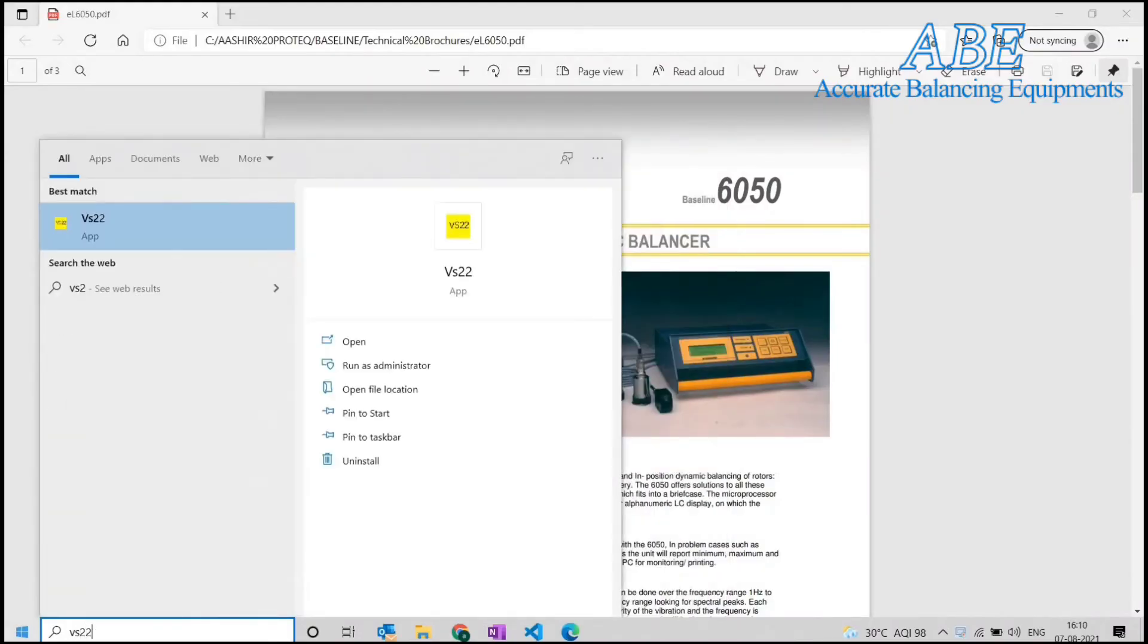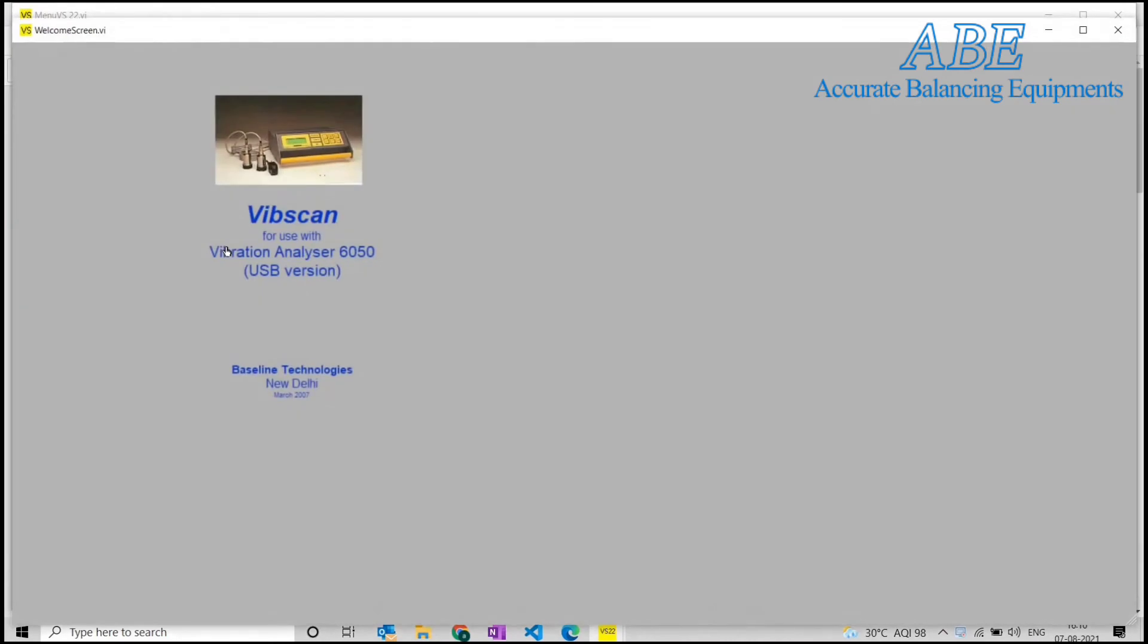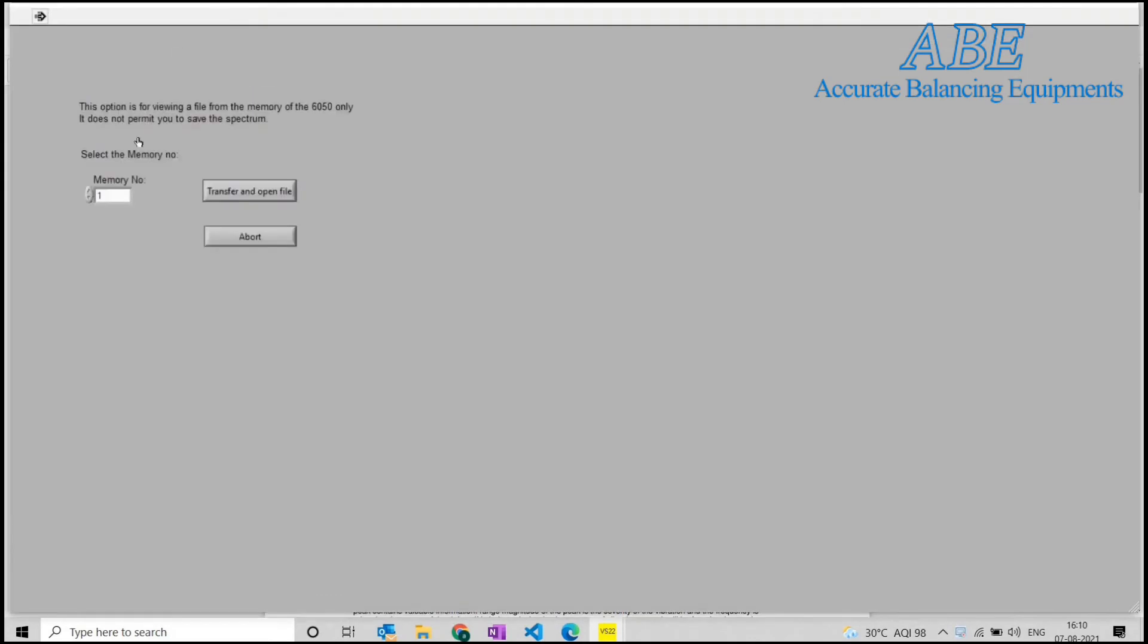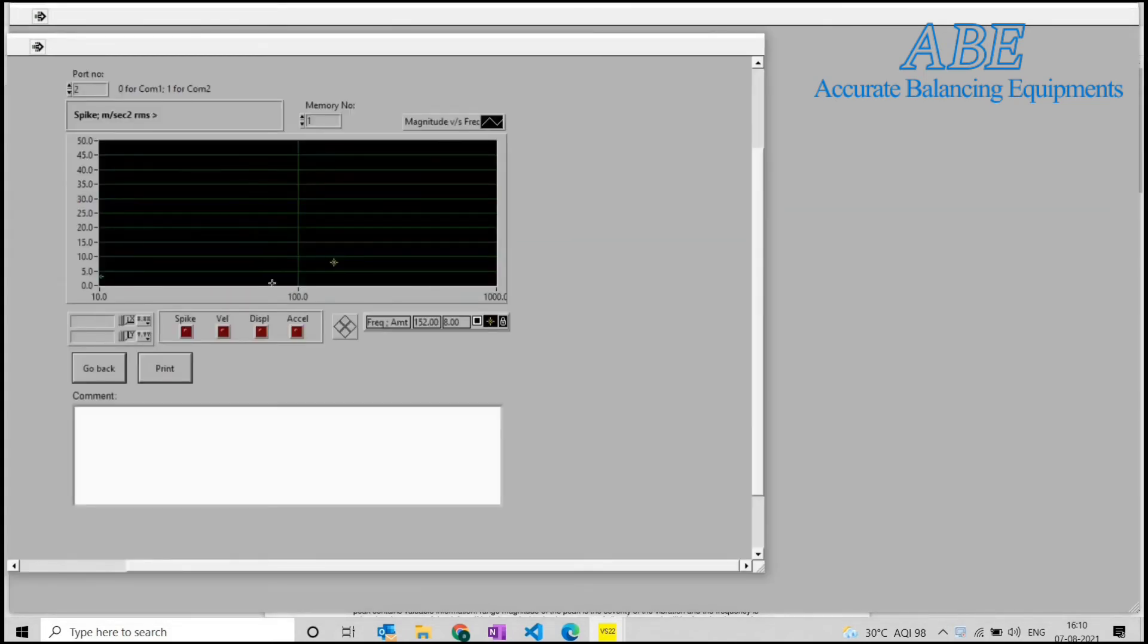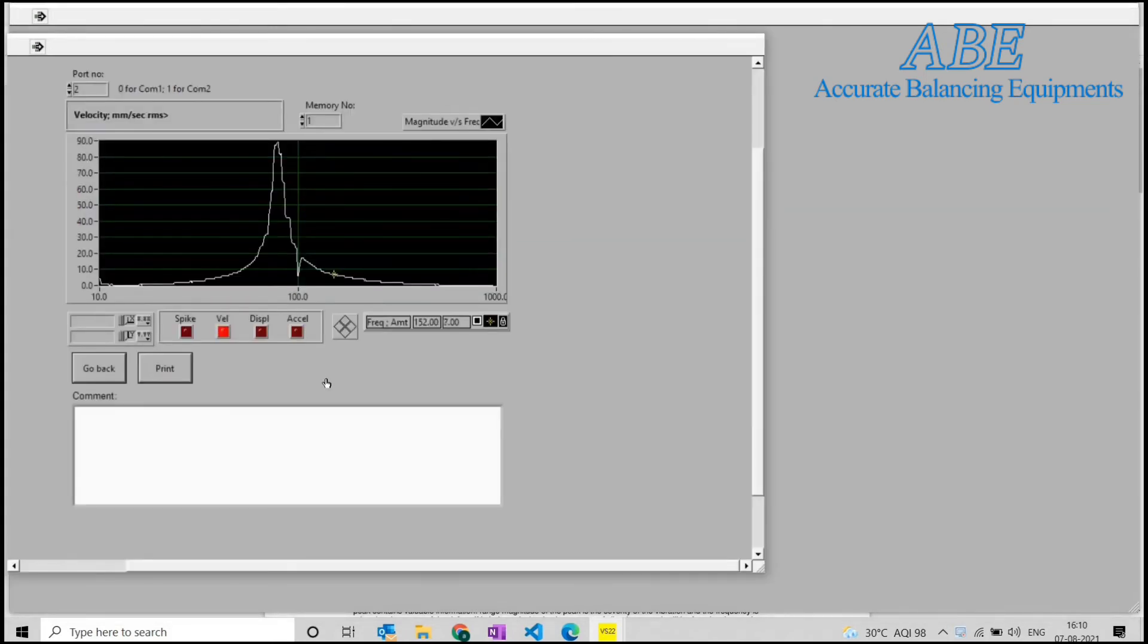Vs22 is a PC-based software developed by Baseline Technologies. In addition to file storage, it also enables spectral enveloping and spectral trending, adding immensely to the power of frequency analysis of the unit. The simplest way to view a spectrum on the PC is to transfer via memory number. This option will not save the file on the PC and should be used only for quick viewing of the spectrum.